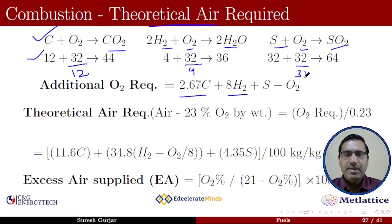Similarly, the oxygen required for S percentage of sulfur is 32 divided by 32 multiplied by S percentage, which equals S. Since we already have O2 percentage of oxygen in the fuel, that percentage has to be subtracted. So the additional oxygen requirement is 2.67C + 8H2 + S - O2.